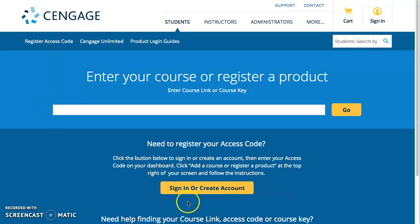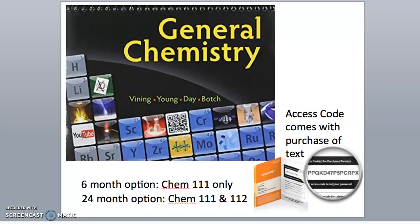You will need two different codes. One is the access code. This proves that you purchased access to the software. The other is the course code, and this gets you registered into our specific course and our homework.